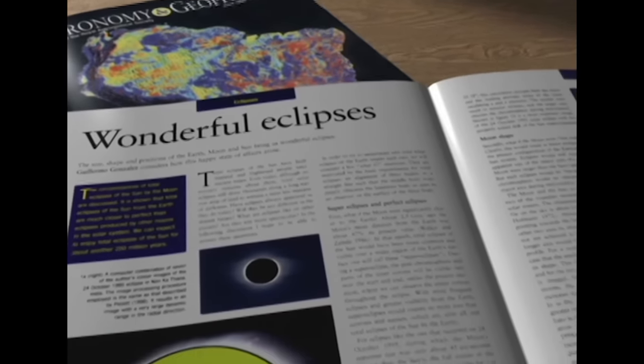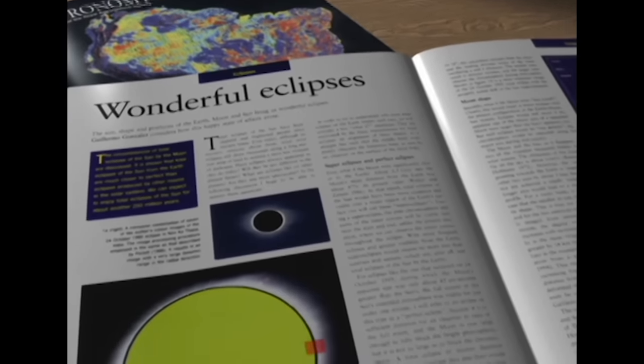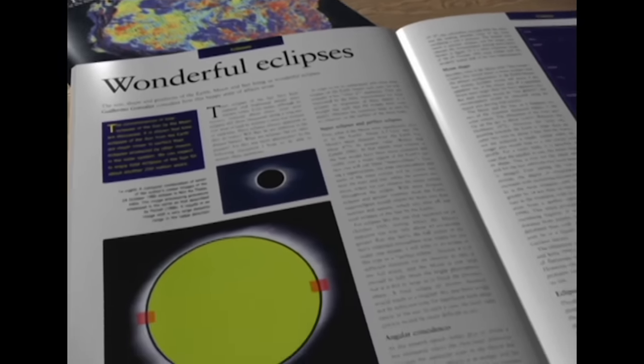Gonzalez described this relationship between our survival and our ability to observe solar eclipses in the journal Astronomy and Geophysics. His ideas intrigued philosopher Jay Richards. I've been focusing my research in cosmology and in particular on applying probability theory to the fine-tuning of the laws of physics.